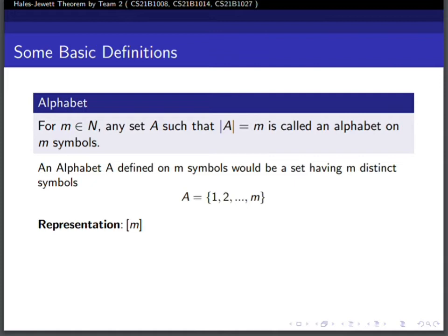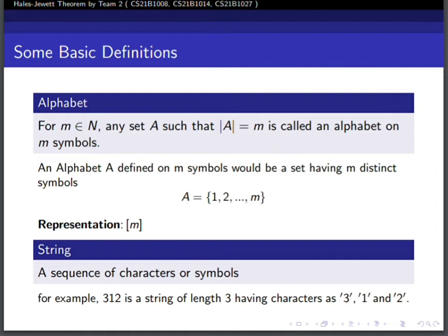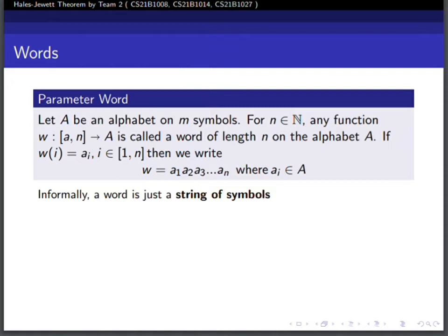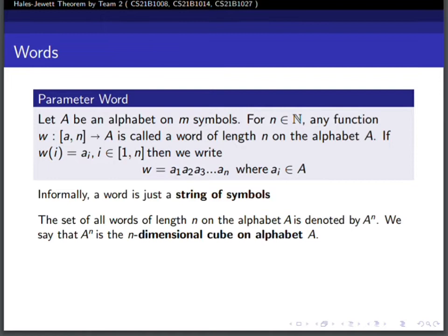What is a string? A sequence of characters or symbols is known as a string. A parameter word is a string having each character belonging to a given alphabet. A word is denoted by w. The set of all words of length n on alphabet A can be denoted by A to the power n.